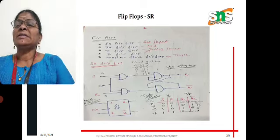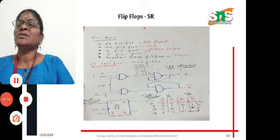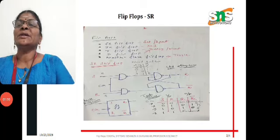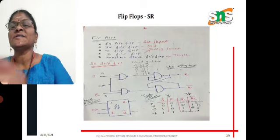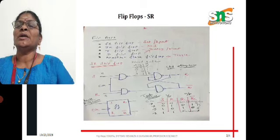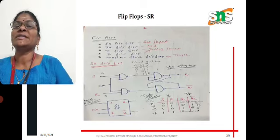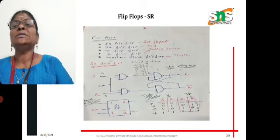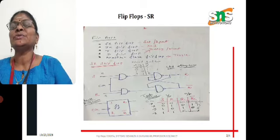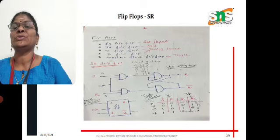Now let us discuss about the SR flip-flop. SR flip-flop stands for set-reset flip-flop. Looking at the circuit, the first part contains 2 NAND gates and the second part is a cross-coupled circuit. That cross-coupled circuit is a latch circuit. In the first part we have 2 NAND gates, and we can use any gates — the circuit operation depends on the gate chosen. Here we have taken NAND gates.